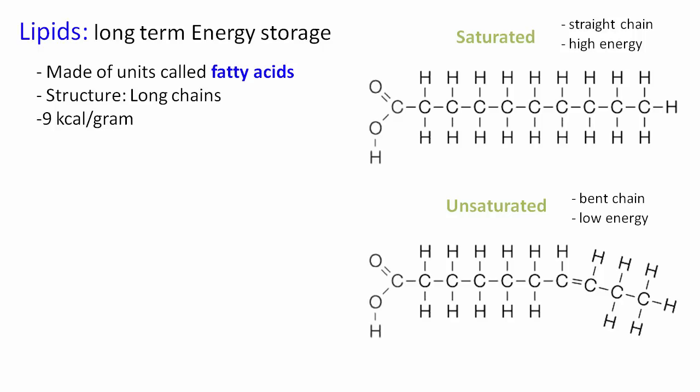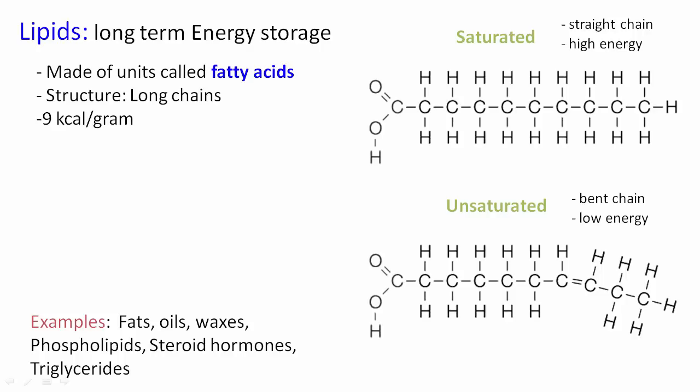Saturated fatty acids, because they are completely filled with all the chemical bonds they've maximized—the number of chemical bonds they have—tend to be straight chains and store higher amounts of energy. So examples of lipids include fats and oils, waxes, some things you might not recognize yet like phospholipids, steroid hormones, and triglycerides.